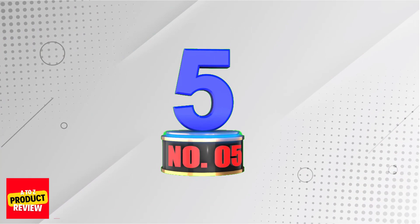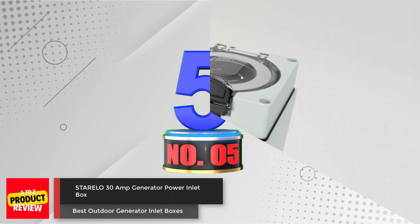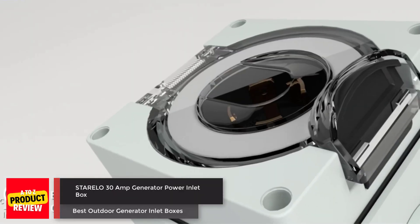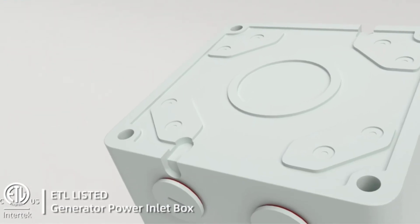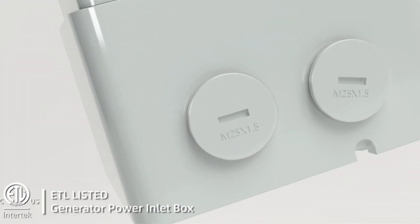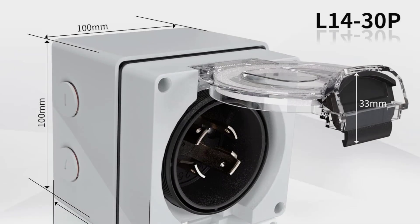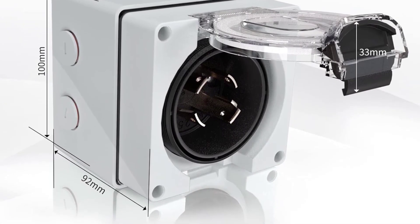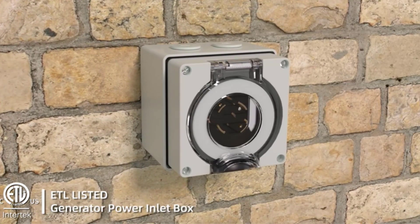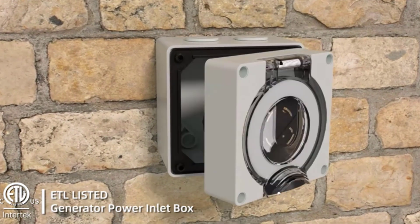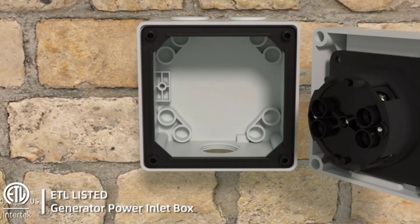Number 5. The Sterlo 30 Amp Generator Power Inlet Box NEMA L1430P is a weatherproof and dustproof outdoor power inlet box that is ETL listed. It has a NEMA L1430P, 125 and 250V, 30A, 3-pole 4 wire grounding type, and protection class IP66.